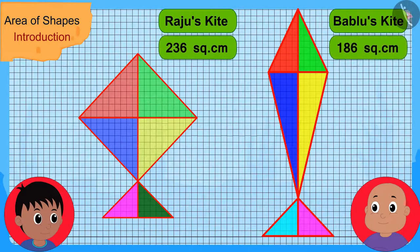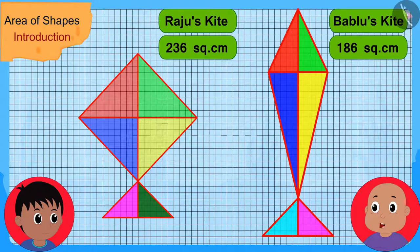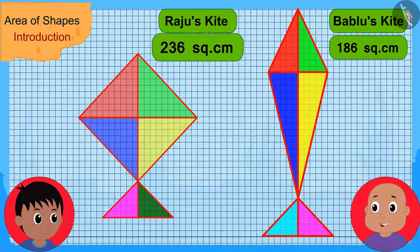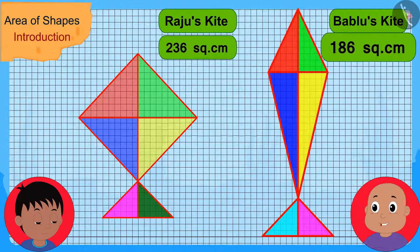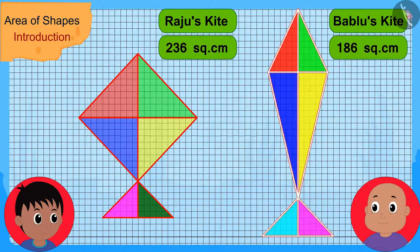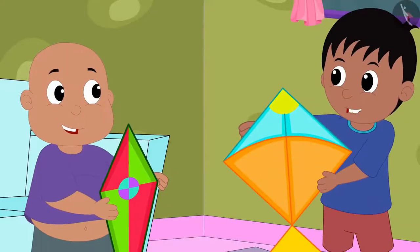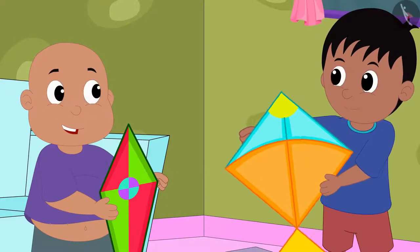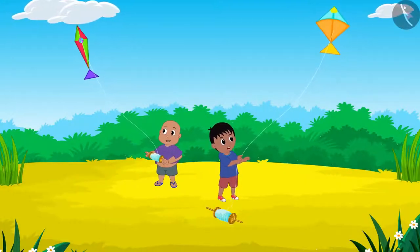Raju also found the area of Bablu's kite. Bablu confirmed, 'Yes, Raju, you are right. Your kite's area is 236 square centimeters and my kite's area is 186 square centimeters. So your kite is bigger than my kite.' Raju said, 'Let us go to the playground and fly our kites.' And the two friends went to the playground to fly their kites.